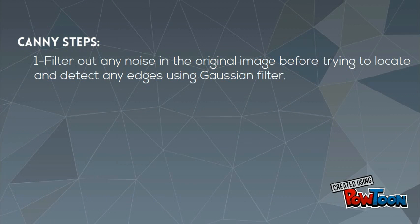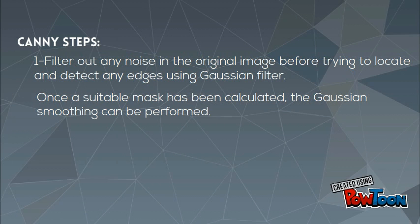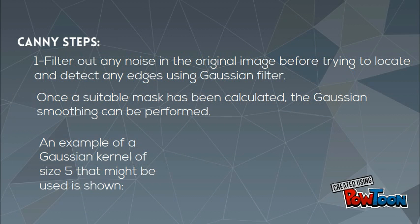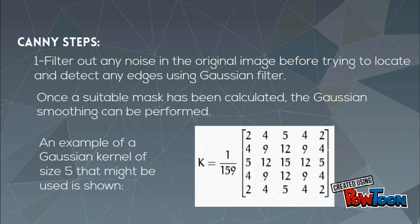Canny steps: first, filter out any noise in the original image before trying to locate and detect any edges using a Gaussian filter. Once a suitable mask has been calculated, the Gaussian smoothing can be performed. An example of a Gaussian kernel of size 5 that might be used is shown.